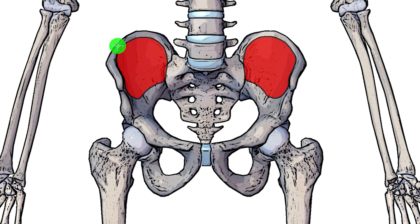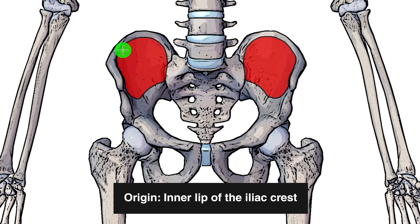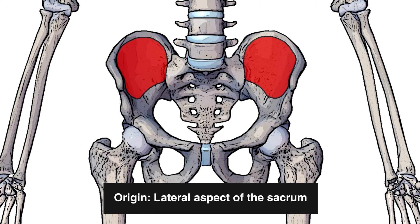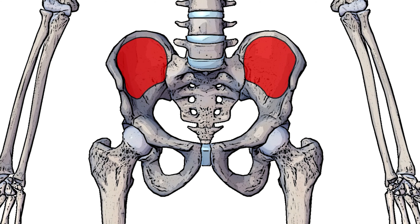You'll also notice that the origin branches onto the iliac crest — the crest being the top of the ilium. The inner lip of the iliac crest is also part of that origin. Additionally, the red area crosses onto the lateral aspect of the sacrum. But the main origin point you really need to remember is that the iliacus originates from the superior two-thirds of the iliac fossa — that's the main bulk of the origin.